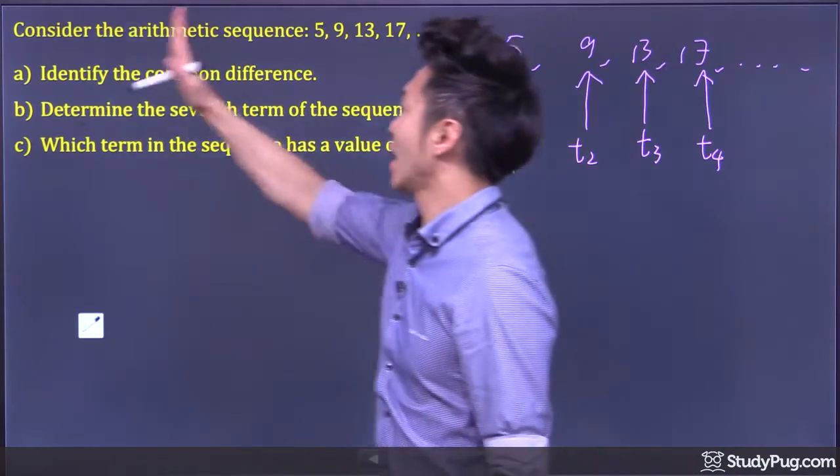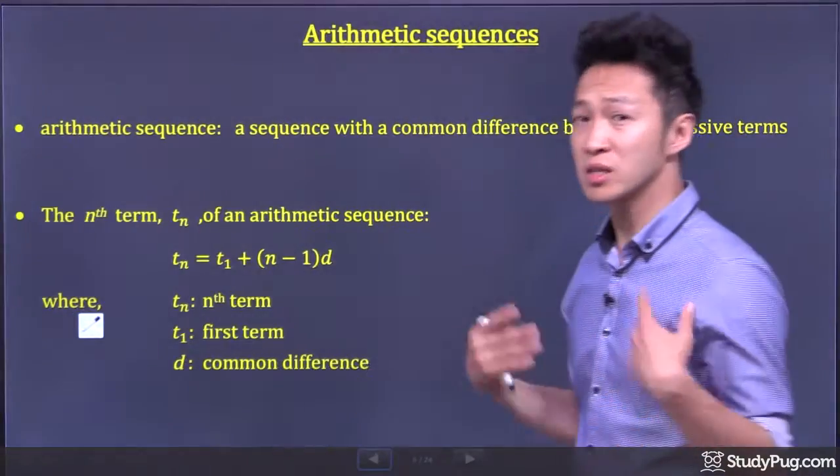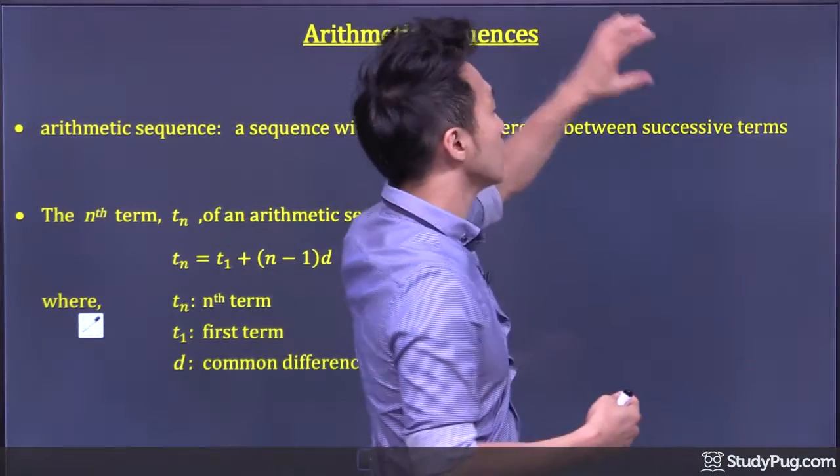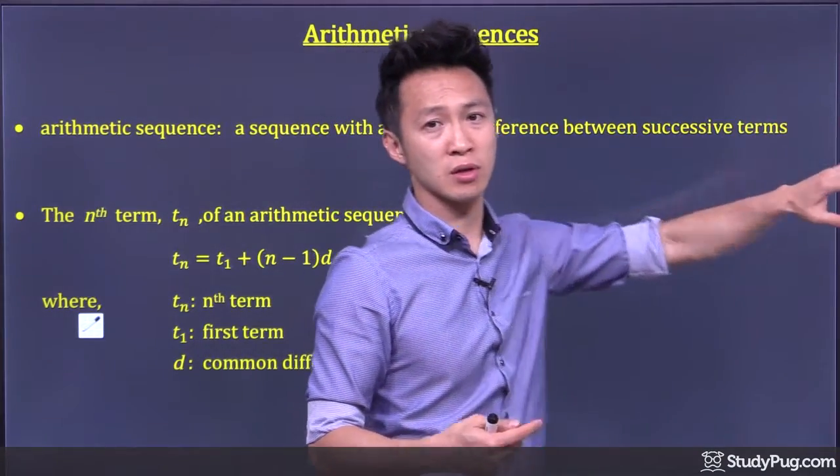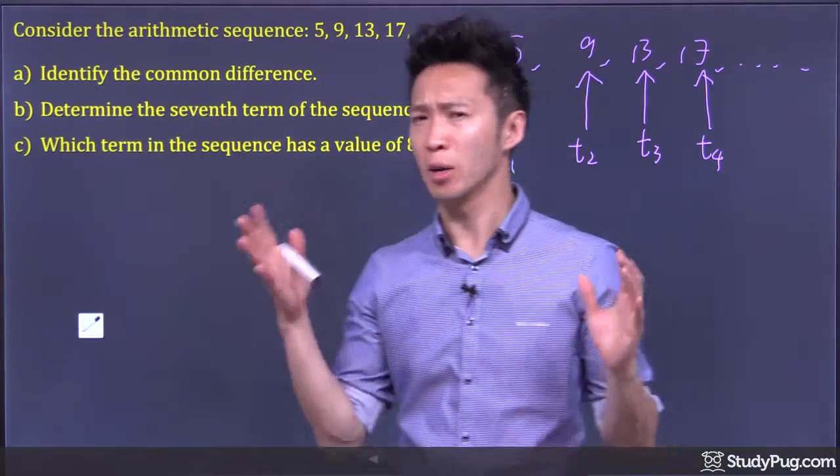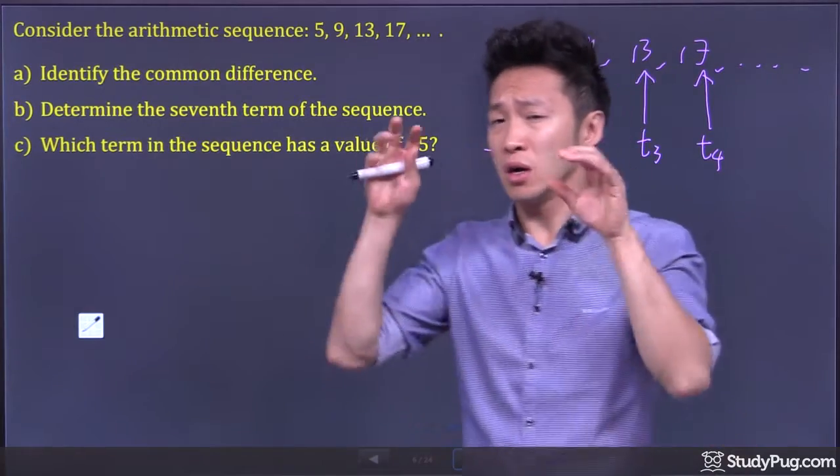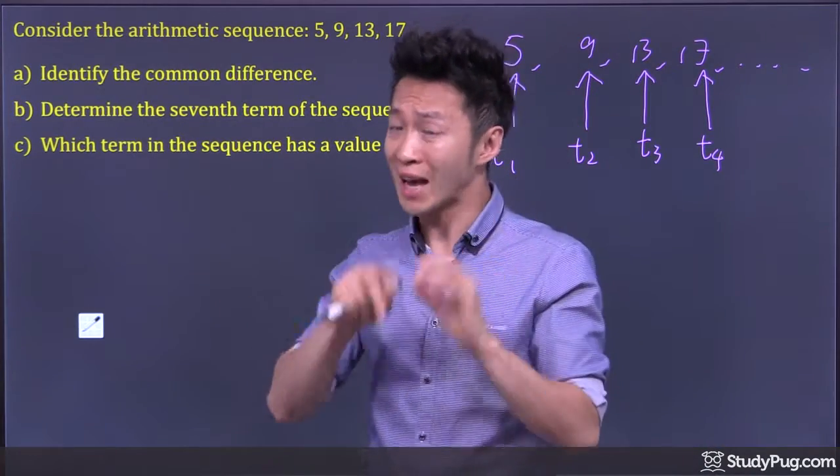Question 8: Identify the common difference. Well, common difference is defined as the difference between successive terms. So to find a common difference, we have to subtract a pair of terms. And it doesn't matter which pair we choose, as long as the terms are right next to each other.